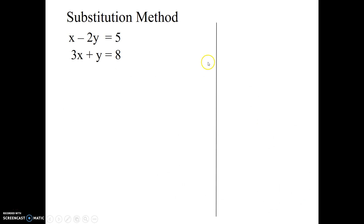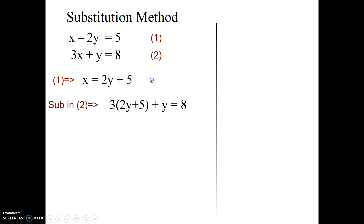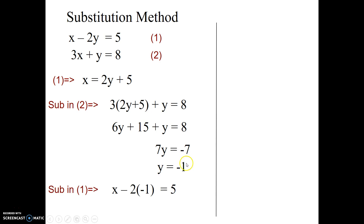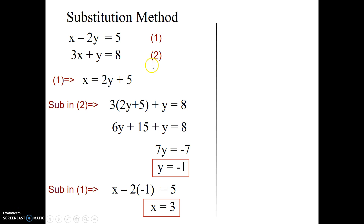Another example, a bit more quickly. I'm going to rearrange equation one to be x equals something, then substitute that into equation two. Expand the brackets, collect like terms, find y, then take that y and substitute it back into the first equation to get x. Write down labels like 'sub into eq 1' and 'sub into eq 2' — these little directions help communicate what you're doing to the reader and to yourself, keeping you less confused.